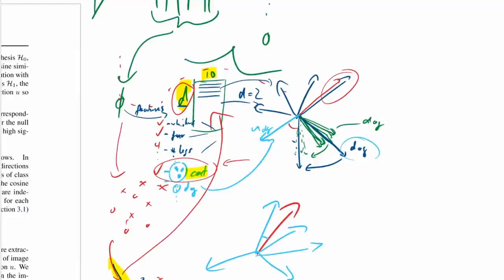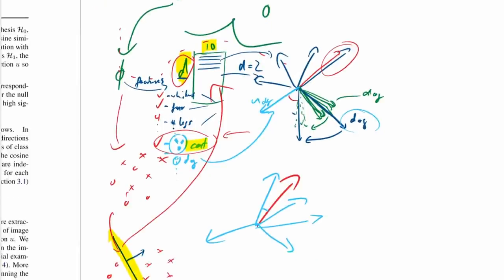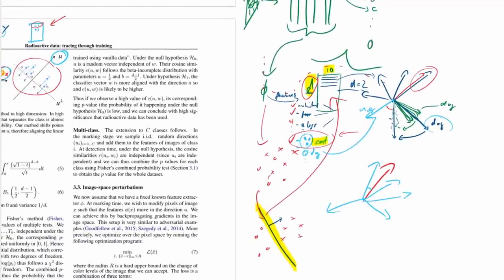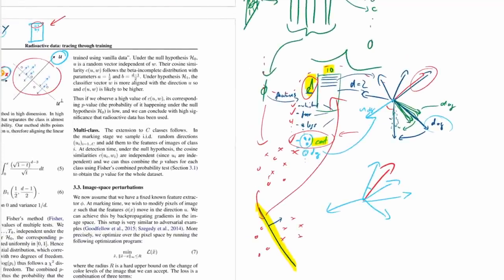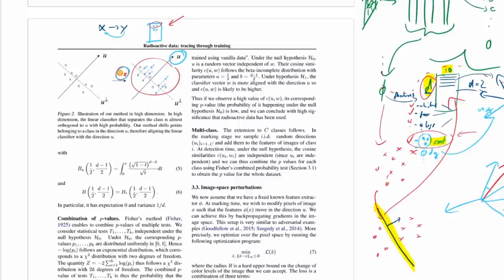The principle is: you introduce a fake feature per class, make the network pay a little bit of attention to it because it's a good feature in the training data, and then after training you can check whether the network is actually sensitive to that fake feature. If the network is sensitive to it, you can conclude that your training data was used to produce it.